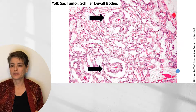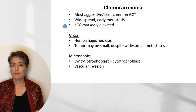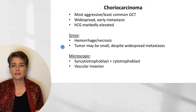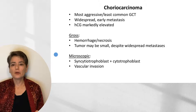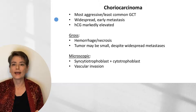Choriocarcinoma is the most aggressive and least common of the germ cell tumors. It tends to have widespread and early metastasis, and human chorionic gonadotropin may be markedly elevated. This tumor typically shows hemorrhage and necrosis and may be just a small tumor even if the patient has widespread metastases. Choriocarcinoma is a tumor of syncytiotrophoblasts and cytotrophoblasts — cells we associate with the placenta — whose role is to burrow into blood vessels. We therefore frequently see vascular invasion that can account for this early metastasis.